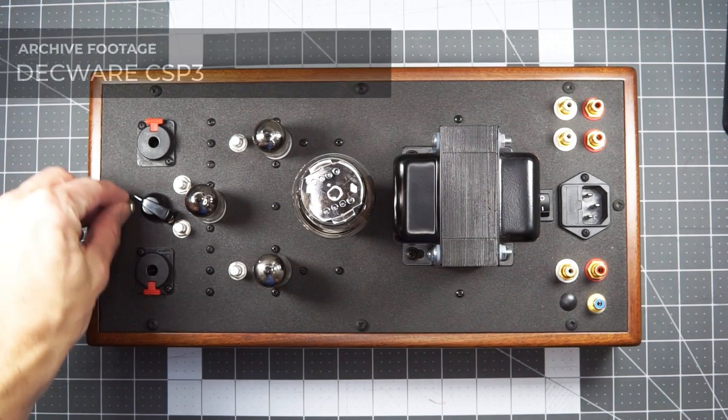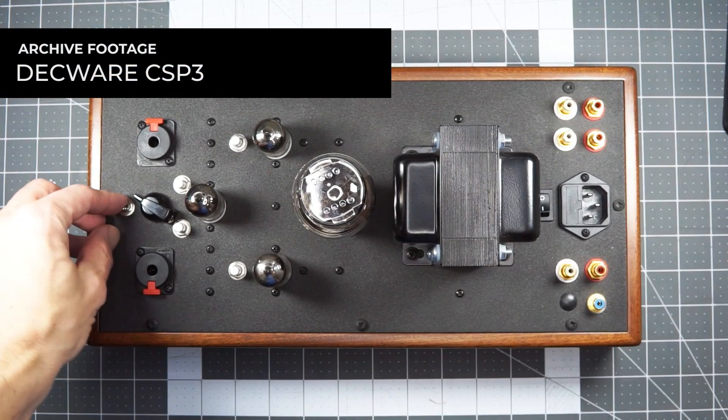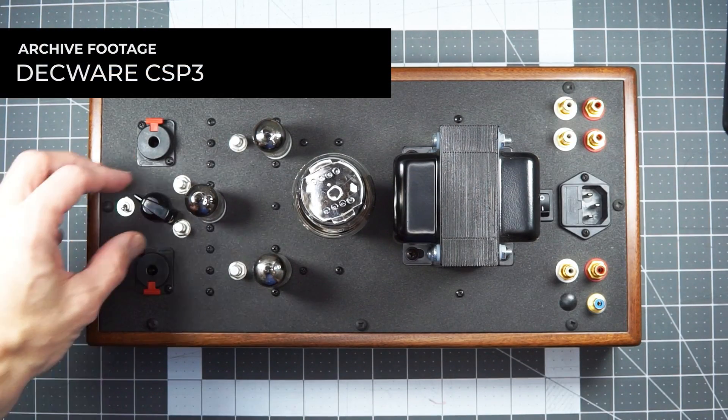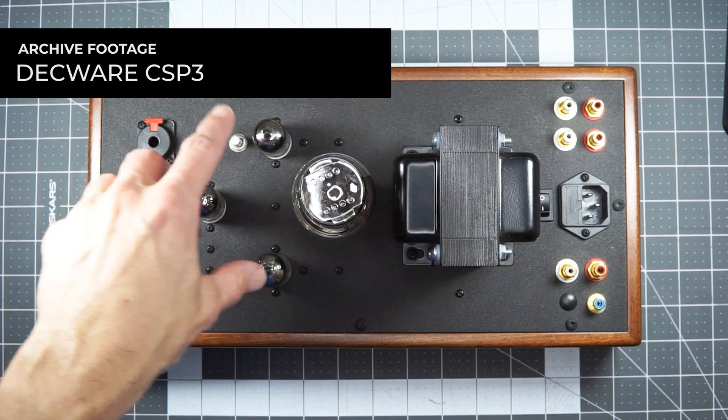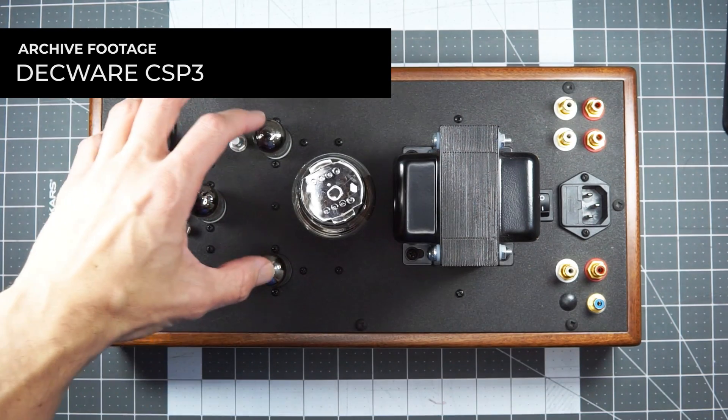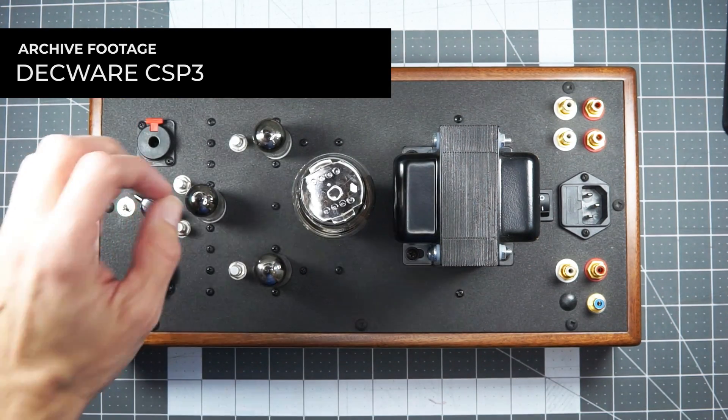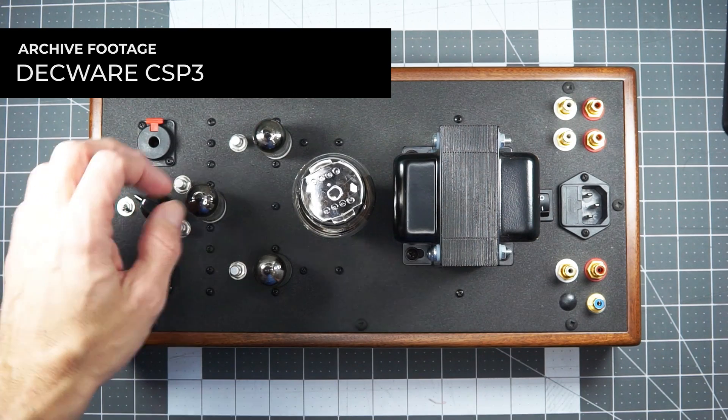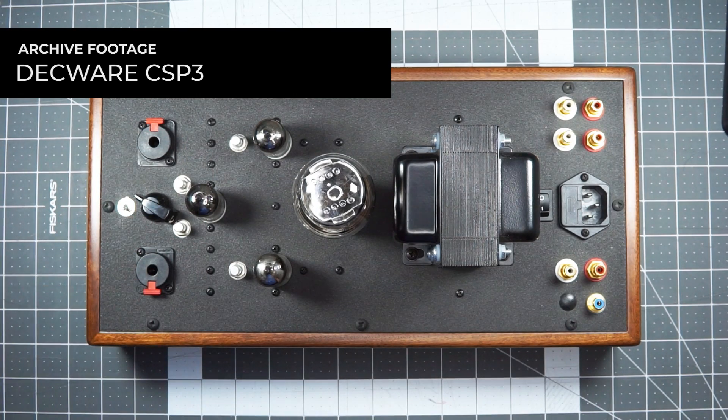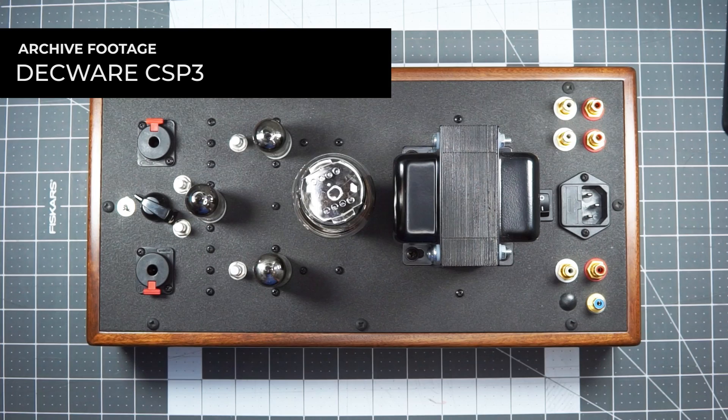Next up, OTL or output transformer-less, which is basically the tube amps have a lot of voltage in them, and you got to step that voltage down from high to low voltage to match speakers or headphones. And so you need a transformer to do that.